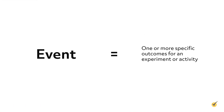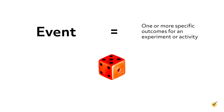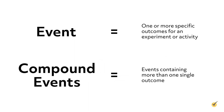In statistics, an event is one or more specific outcomes for an experiment or activity, such as flipping a coin or rolling a die. For example, rolling a five on a die is considered an event because it is one of the possible outcomes for rolling the die. We could also consider multiple outcomes to be an event, such as rolling an odd number. Events containing more than one single outcome are called compound events.